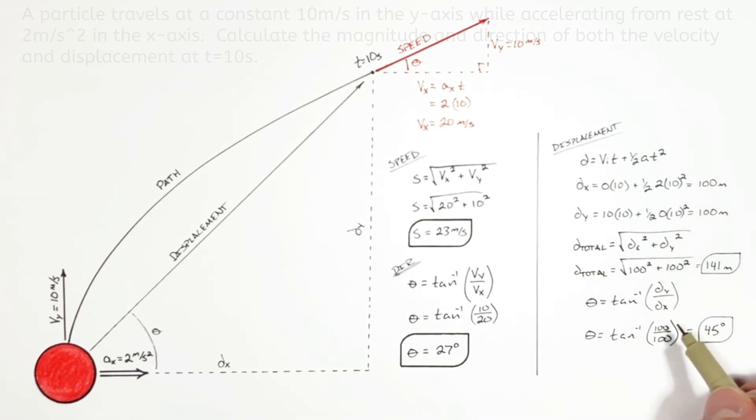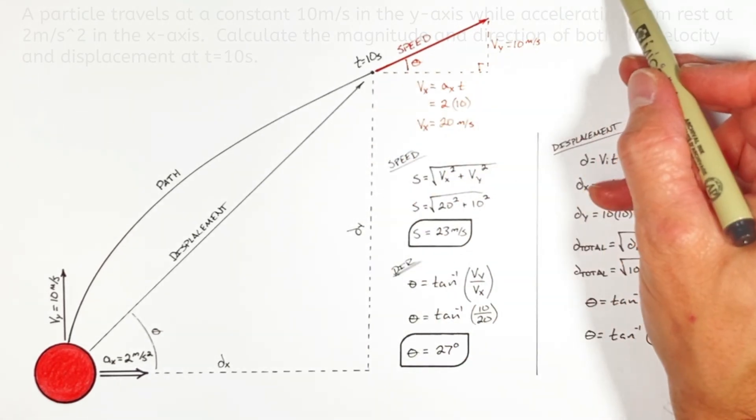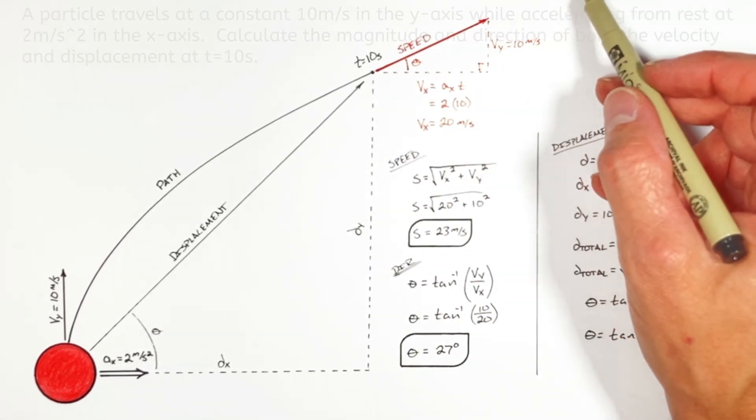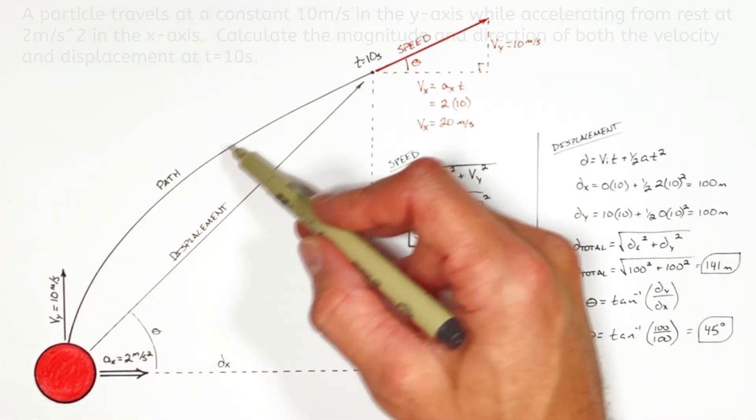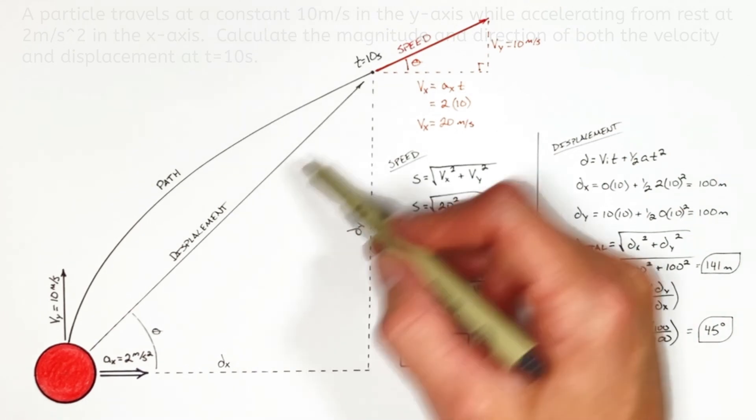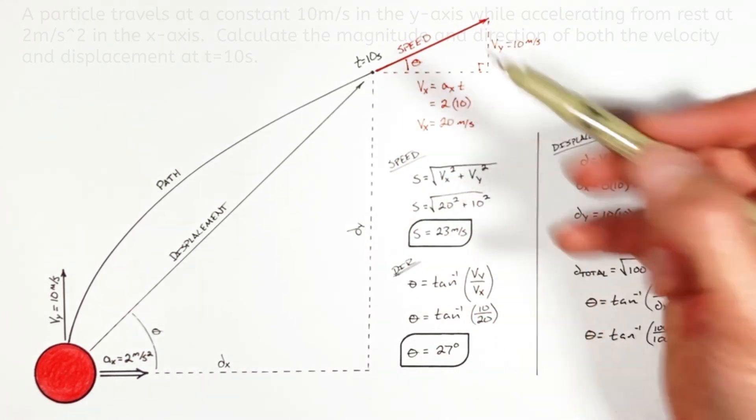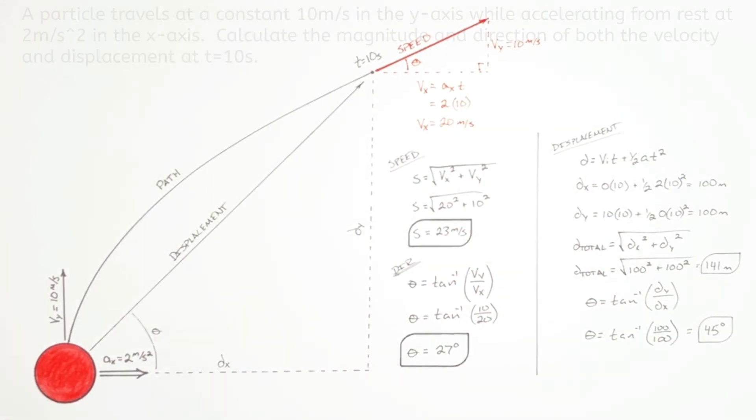And that's pretty counterintuitive. You think if the ball is traveling at 27 degrees relative to the x-axis its displacement is probably going to be in the same direction. But realize because this thing is going in a curve, its displacement vector doesn't necessarily have to be parallel to the velocity vector.